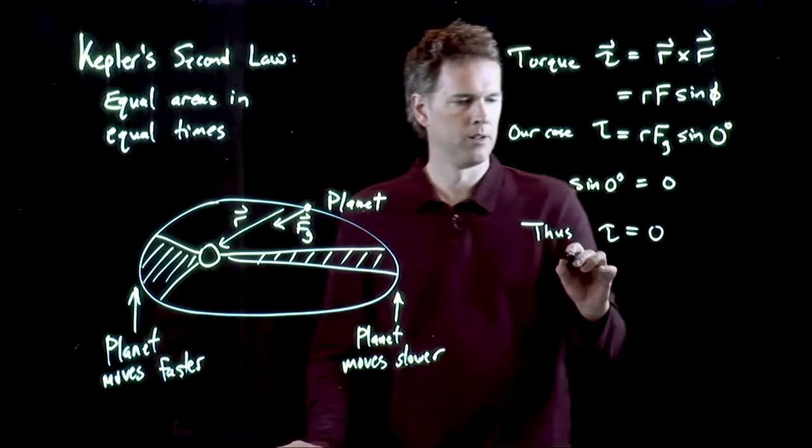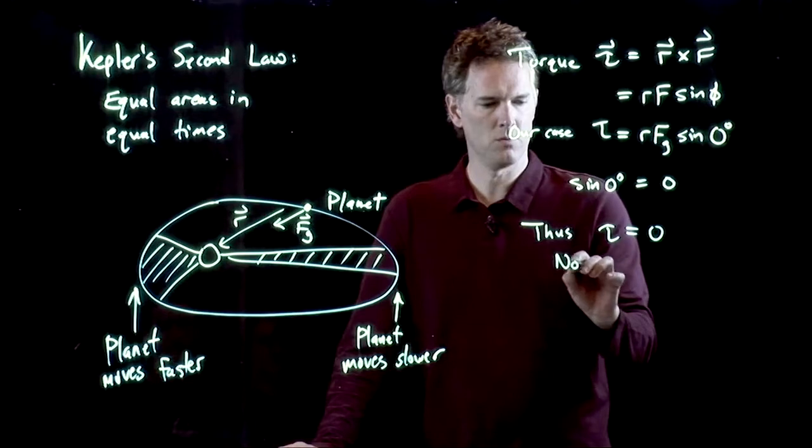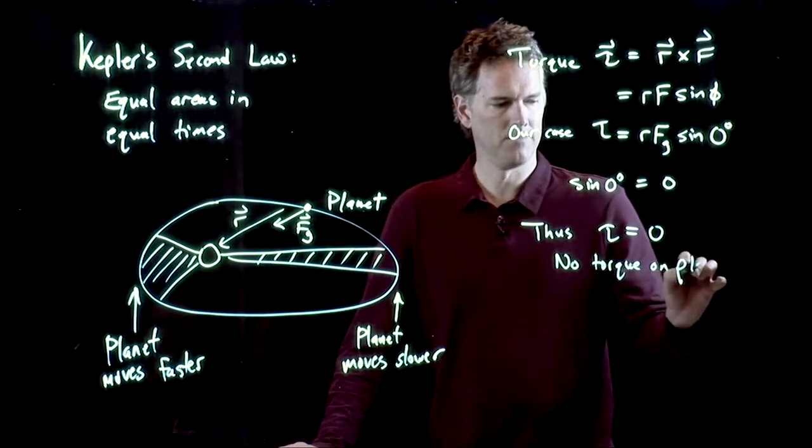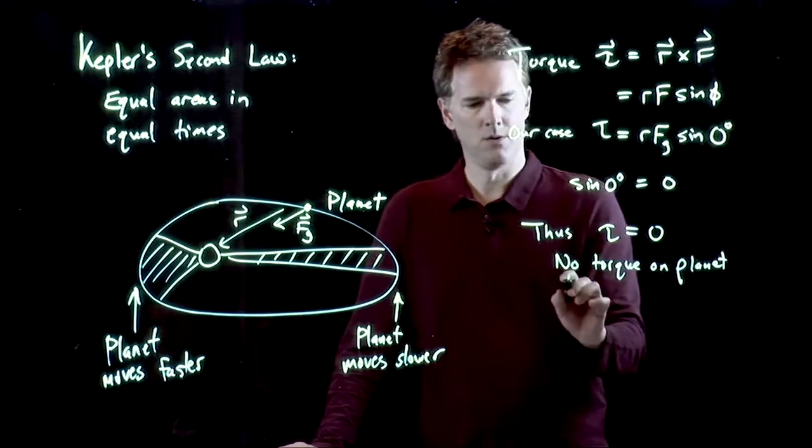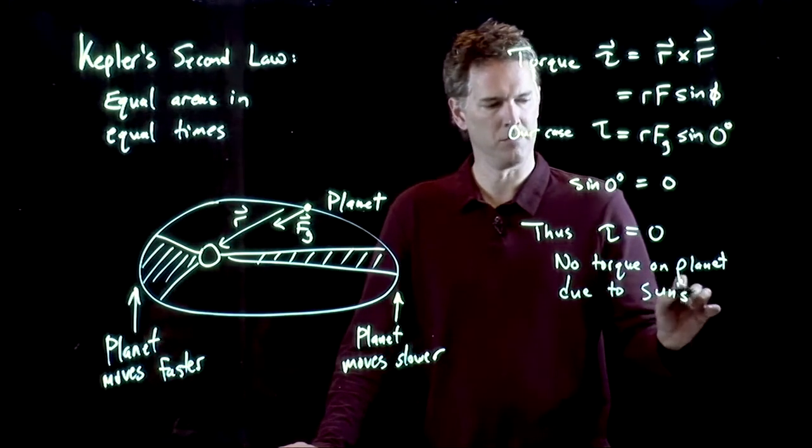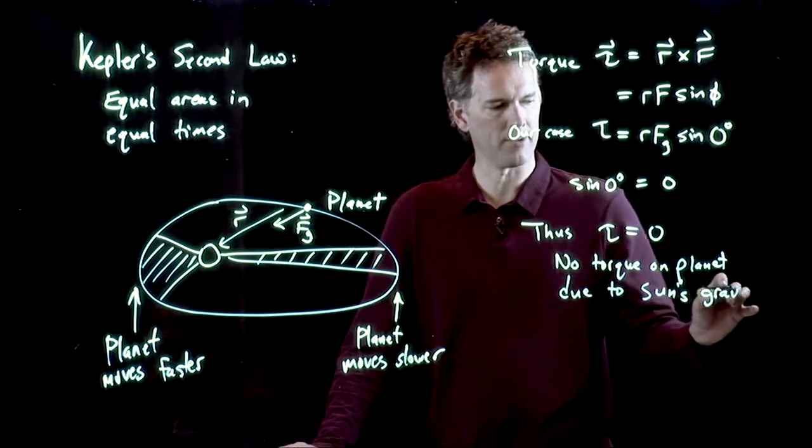So, τ is equal to zero. There is no torque. There is no torque at all on the planet due to the sun, specifically the sun's gravity.